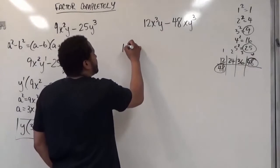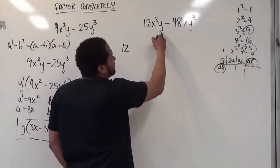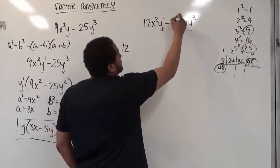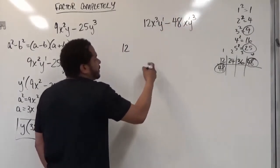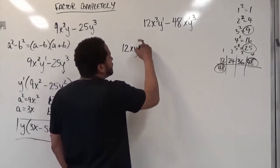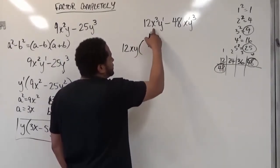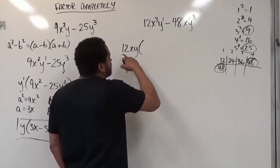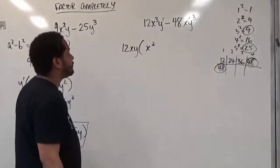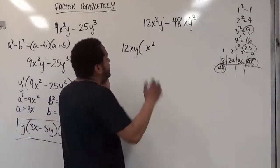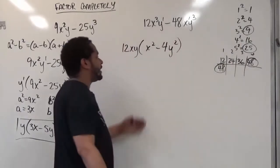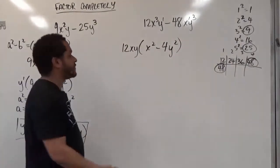I'm going to factor out the 12 out of both of the terms. So I have a 12 in common. What else do I have in common? This has a y, this has a y, this also has an x and an x. I'm taking the smallest powers of each variable they have in common, so this has an x and a y. If I divide this by 12xy, 12x cubed times y divided by 12xy will just give me x squared. Negative 48xy cubed will give me negative 4y squared. I have still a perfect set of two squares here.